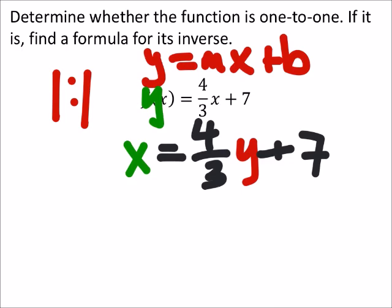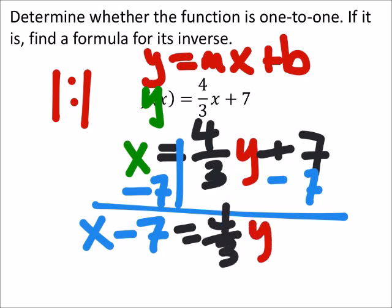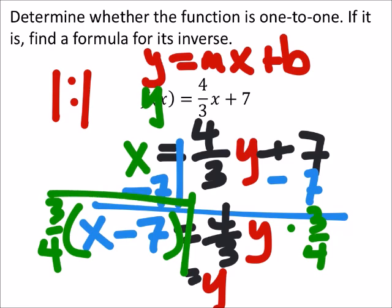Now I'm going to solve for x. So on both sides of this equation, I would subtract 7. So now I have x minus 7 equals 4 thirds y. And to solve this one, we could divide by 4 thirds. I'm just going to multiply by 3 fourths on both sides, just to kind of cut off on time. So now we've got y equals 3 fourths x minus 7.